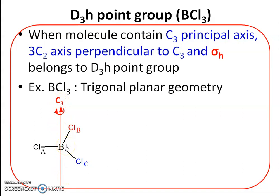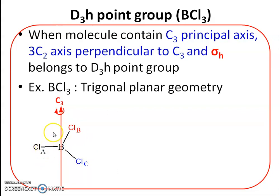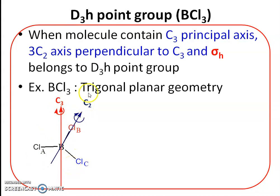The axis through boron perpendicular to the molecular plane is the C3 principal axis because when the molecule is rotated through 120°, chlorine A moves to the position of chlorine B, chlorine B moves to chlorine C, and chlorine C moves to chlorine A — giving an equivalent structure. After a second rotation another equivalent structure is obtained, and after the third rotation an identical structure is obtained, confirming the C3 symmetry.